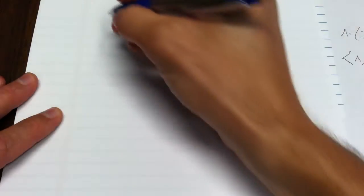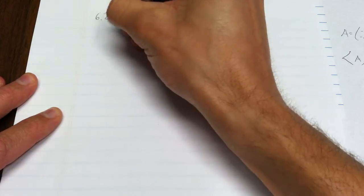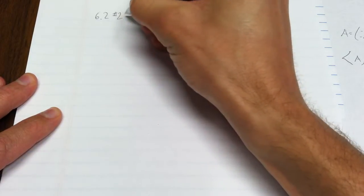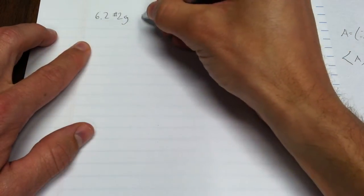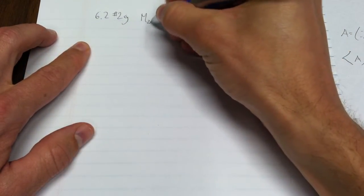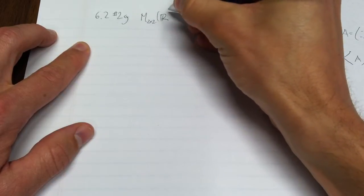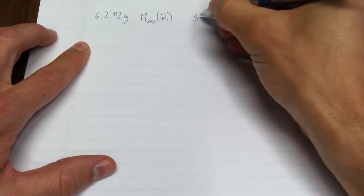Let's see if I can't get a solution to 6.2, number 2, part g. That's the challenge. We have a vector space, it's 2 by 2 matrices with real entries, and we have a set.